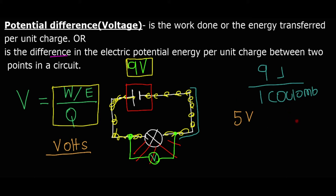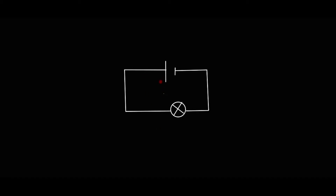So we have the definition of potential difference, the definition of the voltmeter, and the formula. Now let's move on to defining some other concepts. The electrons flow, but these electrons flow in a specific direction.